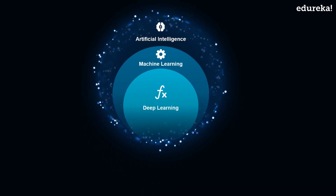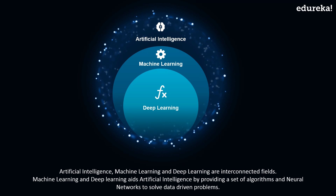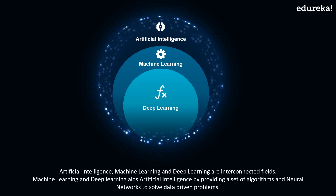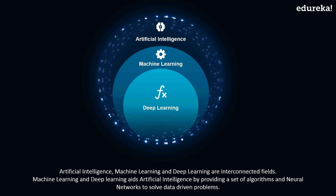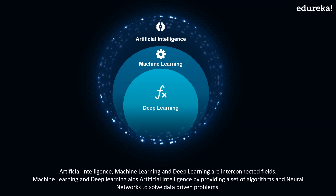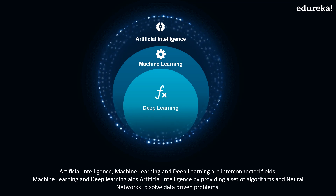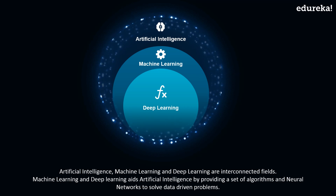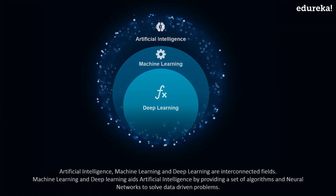Artificial intelligence, machine learning, and deep learning are interconnected fields where machine learning and deep learning aids artificial intelligence by providing a set of algorithms and neural networks to solve data-driven problems.